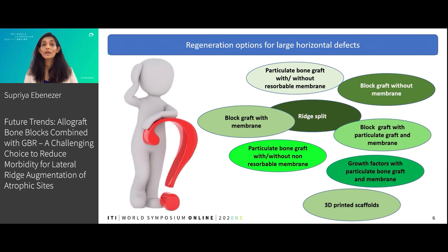We have several options for regeneration of large horizontal defects: particulate bone graft with or without a membrane, block graft with or without a membrane, the use of the ridge split technique, the use of growth factors with particulate graft material, and 3D printed scaffolds.